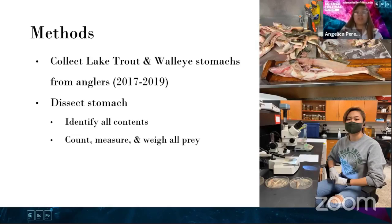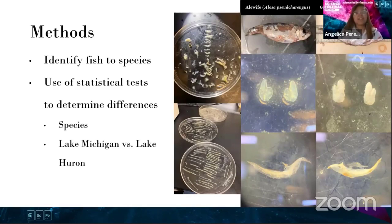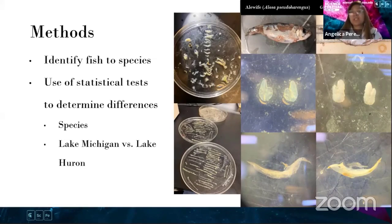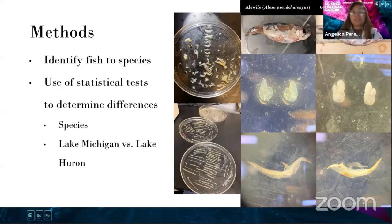To do this, we collected lake trout and walleye stomachs from anglers between the years 2017 and 2019. We dissected their stomachs, identified their contents, counted, measured, and weighed all of the prey we found. A big question is: how do we identify fish if it's been digesting for a long time in a predator's stomach? In very rare cases, we may open a stomach and the fish is perfectly intact. But the majority of the time we just see a pile of bones. So we use the law of parsimony along with looking for key bones such as the otoliths — which are ear bones — and the cleithra, which are fin support bones.